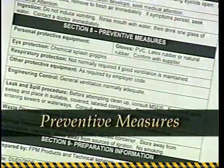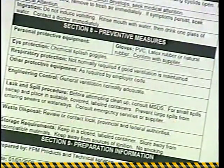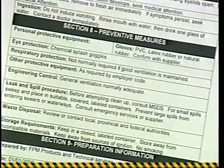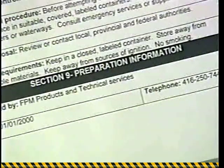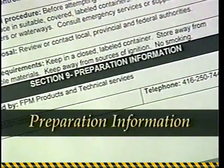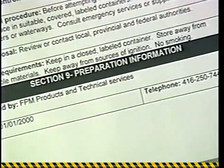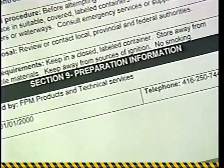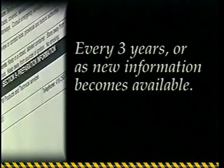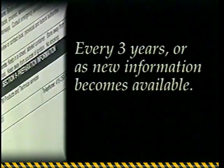Preventive Measures outlines safe procedures for the use, storage, handling, and disposal of the chemical. The preparation information tells you the name and phone number of the company which prepared the MSDS and the date on which it was prepared. The date is required because the law says Material Safety Data Sheets must be revised every three years or as new information becomes available.